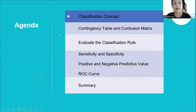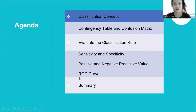Today we'll be covering sections on classification concept, contingency table and confusion matrix, and ways to evaluate the classification rule by using measures of sensitivity and specificity, positive and negative predictive values, as well as ROC curve. Before we end the class, we'll summarize today's material.